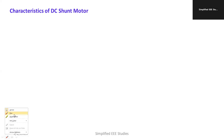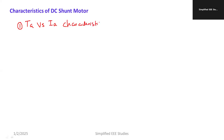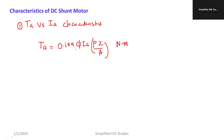First and foremost, I would like to talk about the torque versus armature current characteristics — we can write TA versus IA characteristics. TA stands for armature torque and IA stands for armature current. We already know that the armature torque, derived in the previous session, is 0.159 times phi times IA times Pz divided by A, in Newton meters. From this expression, we can write TA is proportional to phi times IA.